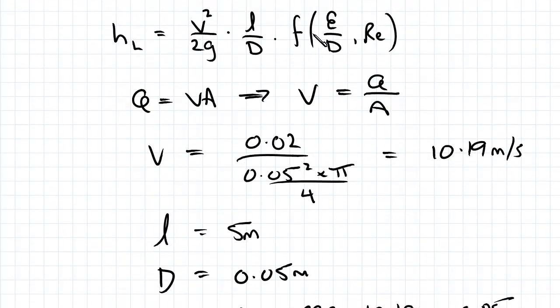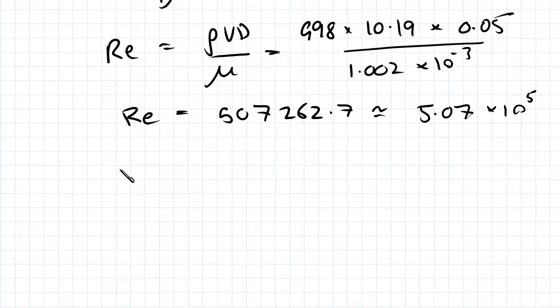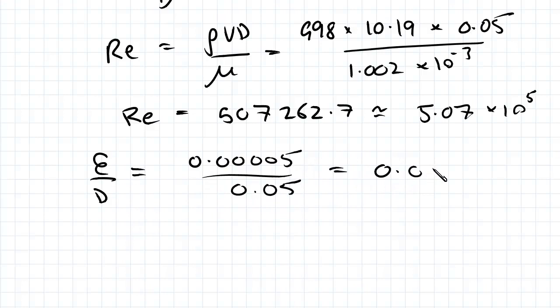We've got Re, we need to find relative roughness. We're given the roughness as 0.00005 divided by 0.05 which is 0.001. So now we're using the Moody diagram for this value of Reynolds number and this value of relative roughness.